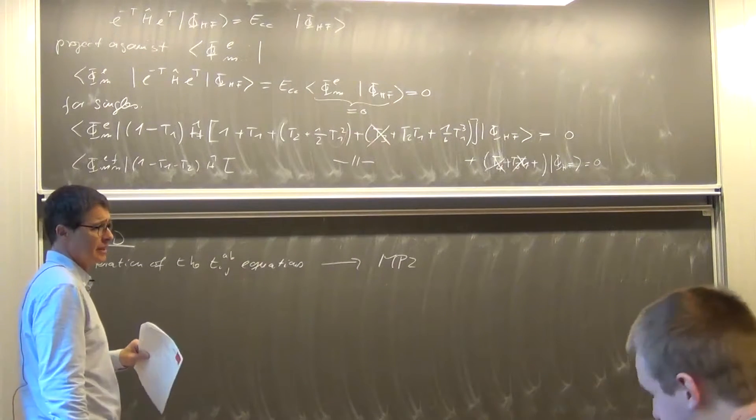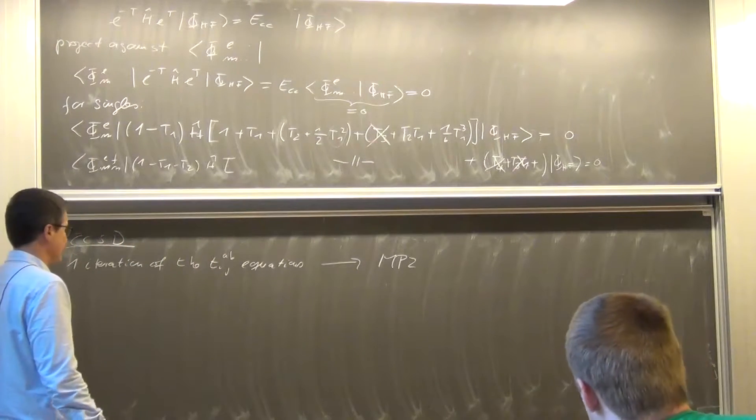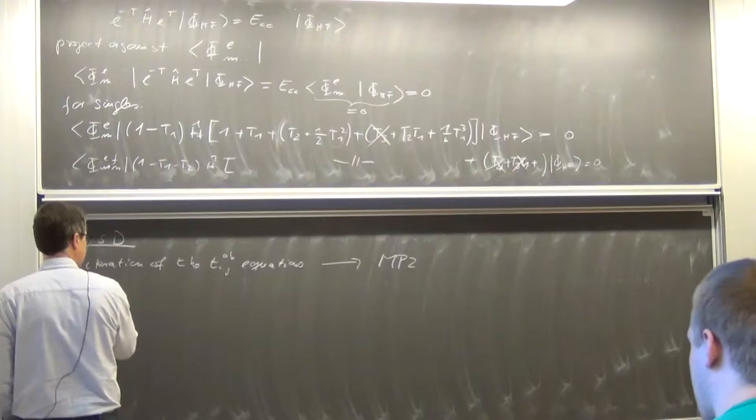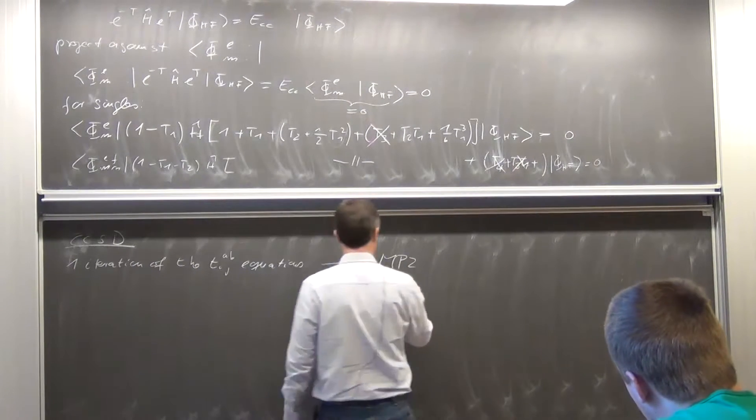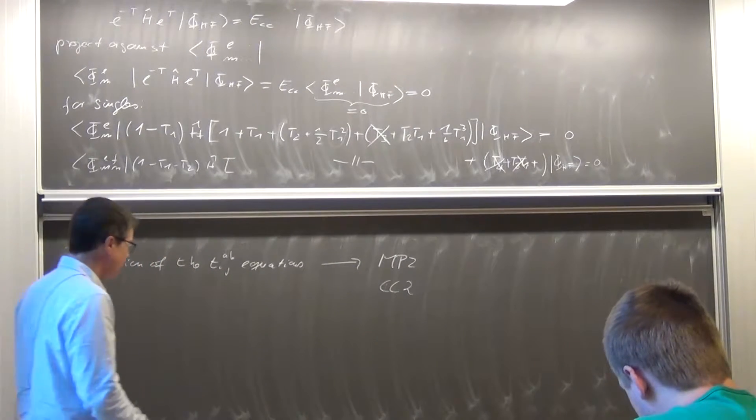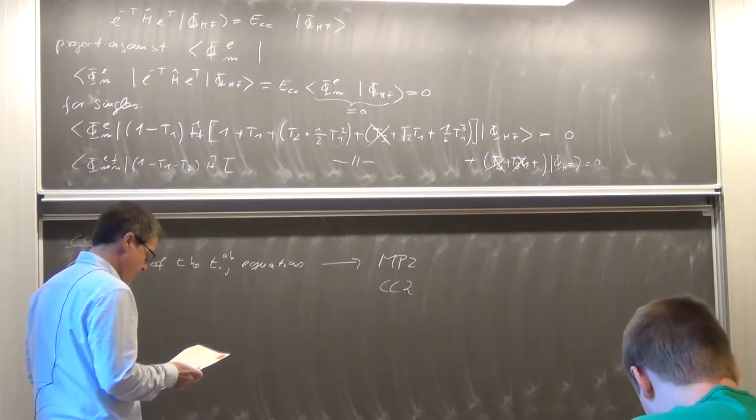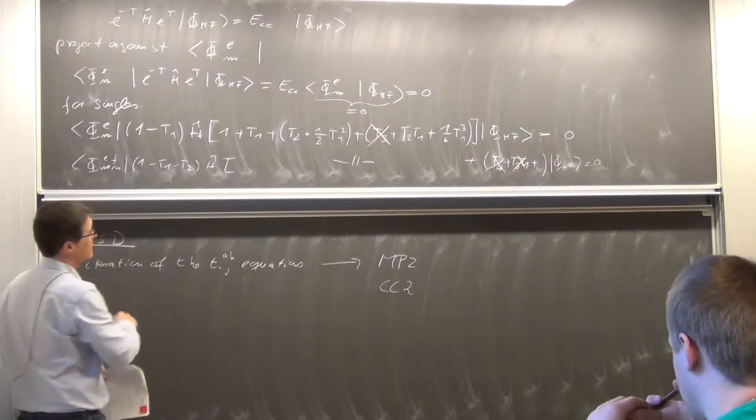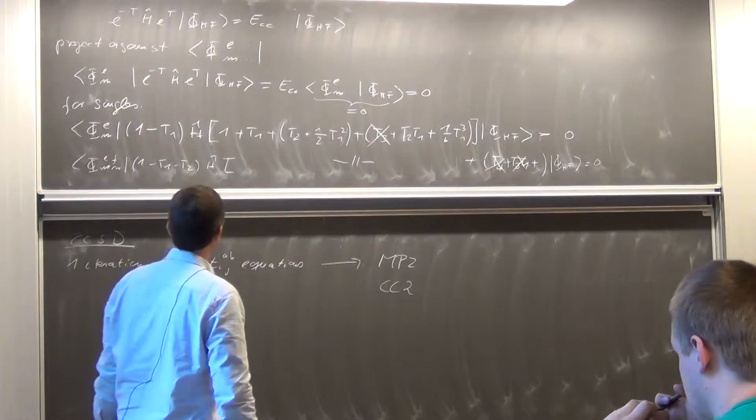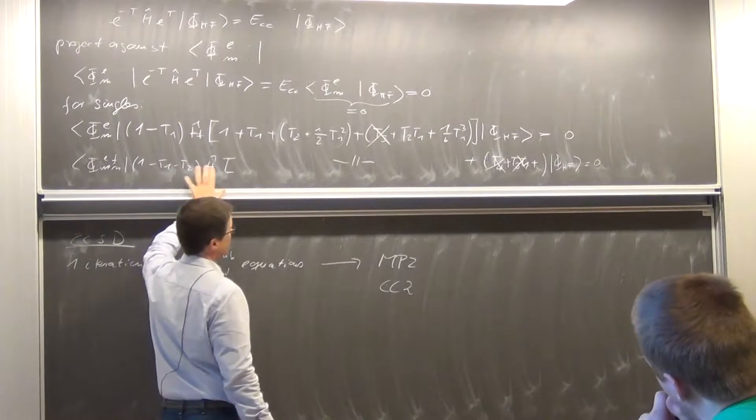There are some other higher-level approximations, better approximations to CCSD. There's one, and being in the country we are in, I have to mention that because it was developed here. It was developed in Aarhus and that is called CC2. So which is an approximation to CCSD. And what they do is, you take the CCSD equations which are those now. You keep the singles equation as it is, but in the doubles equations you throw a lot of terms out.